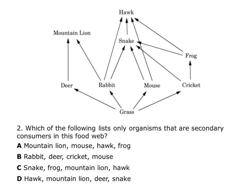This next question asks which of the following lists only organisms that are secondary consumers in this food web. Starting with answer choice A: mountain lion — grass is my producer, deer are primary consumers, and mountain lion are secondary consumers. Now looking at the mouse: in this ecosystem, the mouse eats grass, making them a primary consumer, and that's all the mouse eats. So answer choice A is not correct.